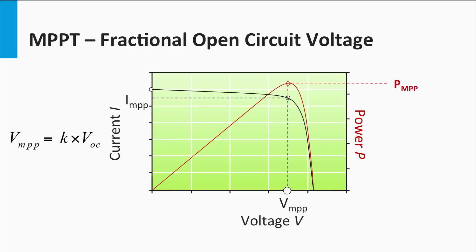For crystalline silicon, the constant K is usually found to be around 0.7 to 0.8 in practice. In general, constant K is based on the PV technology and the kind of solar cells in use. It is found from practice that for a range of IV curves, the ratio of MPP voltage to open-circuit voltage shows little variation. Thus, for changes in irradiance, if the open-circuit voltage can be measured, the MPP voltage can be easily estimated as a fraction of the open-circuit voltage.